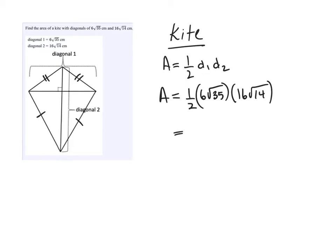So 6 times 16 is 96, and half of 96 is 48.